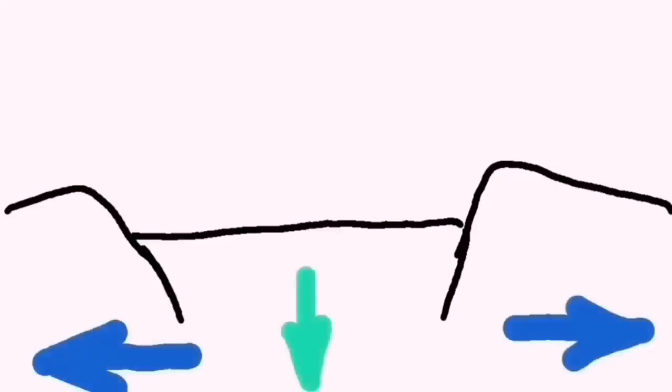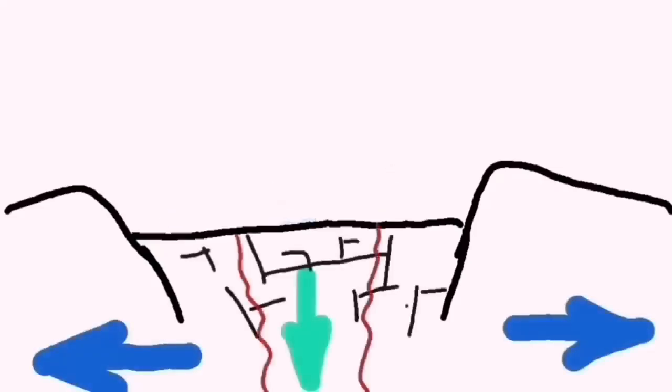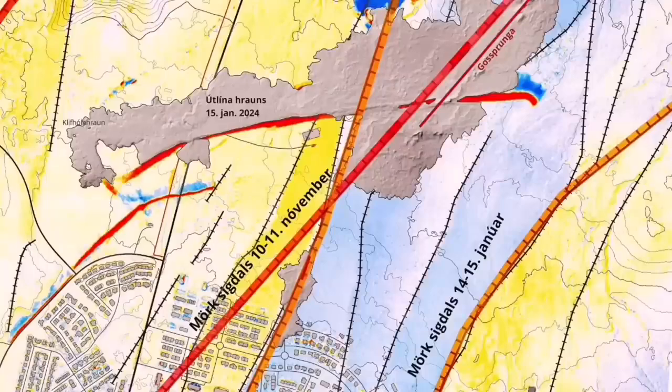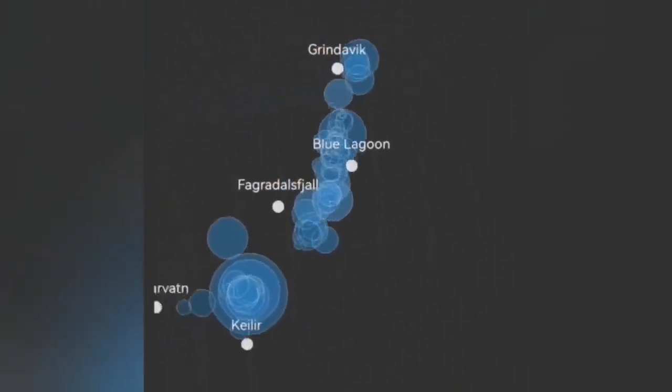This diagram shows that movement ripping apart the land causes downfall of a block of rock, and that creates cracks. Through the cracks, magma can rise and melt and create lava. Now this is a different situation.